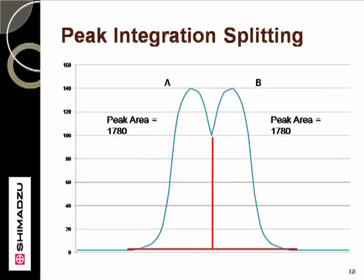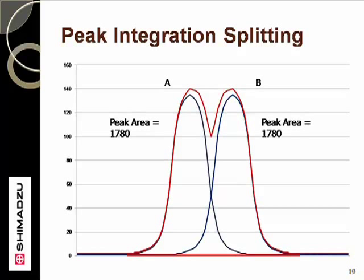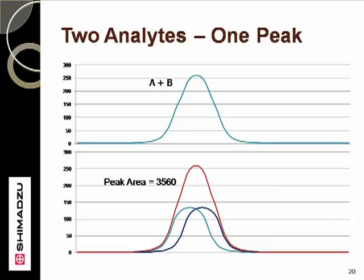If the peaks co-elute much closer, then the situation seems worse, but the peak areas are still evenly distributed at 1780 each. This is due to the equal size of the two analyte peaks — the splitting at the valley evenly splits and distributes the mixed areas from each peak. If the co-elution is even closer, the resulting additive effect may make the two peaks elute as a single peak. If this is the case, there may be no way to split the peaks, and the resulting mixed peak is the sum of the peak areas, or 3560.